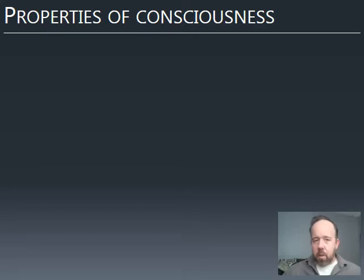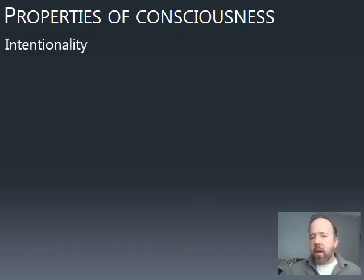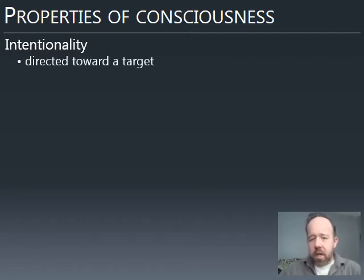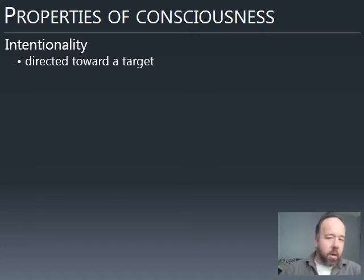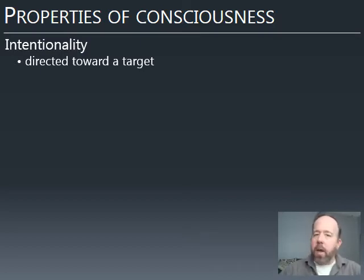We have a basic definition of consciousness: a subjective experience of the world and our own minds. What does it mean to be conscious? One property is intentionality — our consciousness is directed toward a target of some sort. It may be a focus on some stimulus in the environment: another person, something we're seeing, a memory we've called up, something we're imagining, an internal emotional experience, or a decision we're mulling over. Our consciousness is always pointed at something.